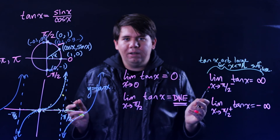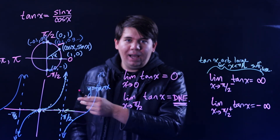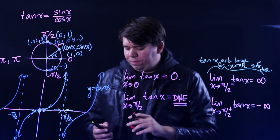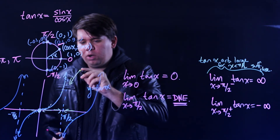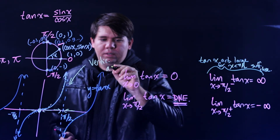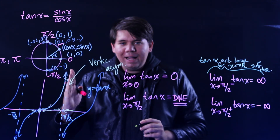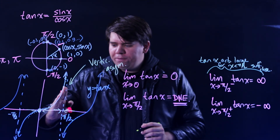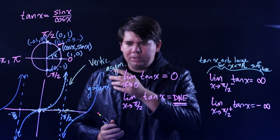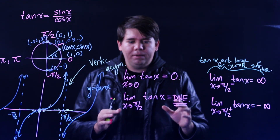We'll explore more examples of this type of behavior. When a function is not defined at a point and blows up to infinity or negative infinity on either side, we call that point a vertical asymptote. It's an imaginary vertical line indicating that the graph shoots up to infinity or down to negative infinity. We'll see more examples of vertical asymptotes and how they help us evaluate and make sense of limits.